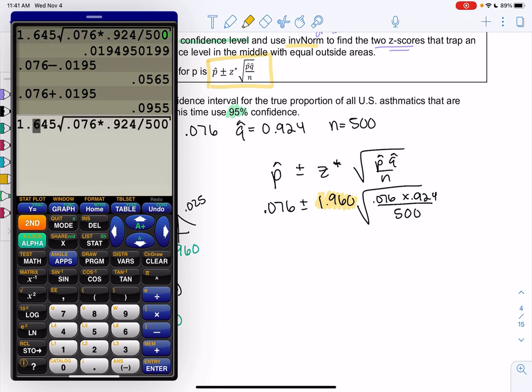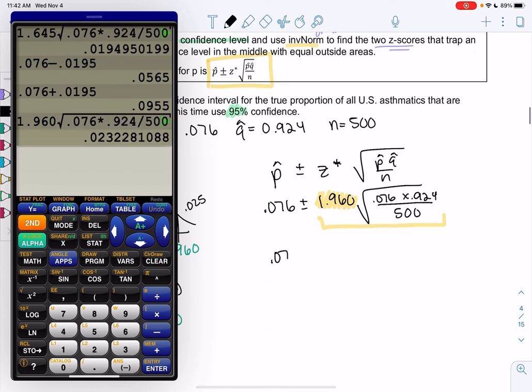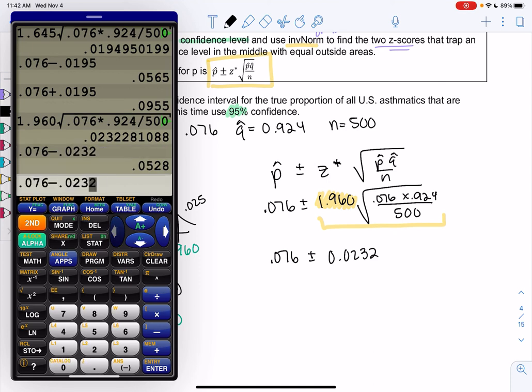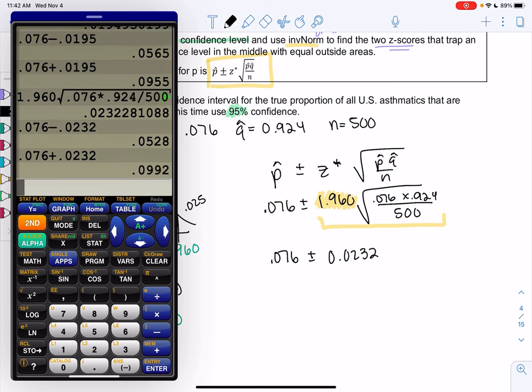So let's go ahead and type everything. You might have the previous example, and you could do second, enter, and just change the z score. Otherwise, type it all. So 1.960, I'm doing this plus or minus piece only, square root. Make sure all three of those numbers are in the square root. And I get 0.076 plus or minus 0.0232. So the plus or minus piece has changed a little. And then we'll do 0.076 minus 0.0232, and then we'll do plus.